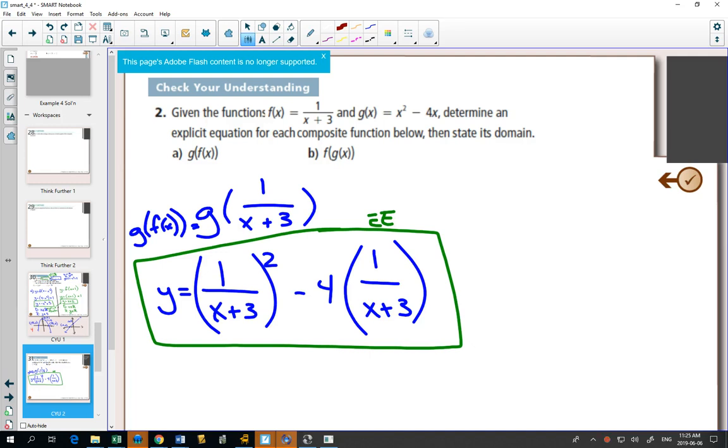What's the domain? Well, for the domain, we have to check, are there any x values that don't work? What are things we're not allowed to do? Not allowed to divide by 0. Not allowed to take square root of negatives. We don't have any square roots here, but we are dividing.